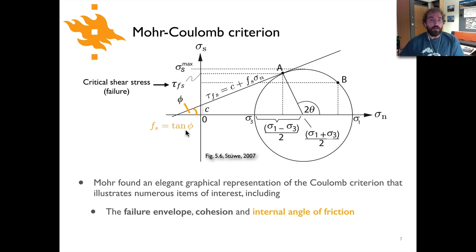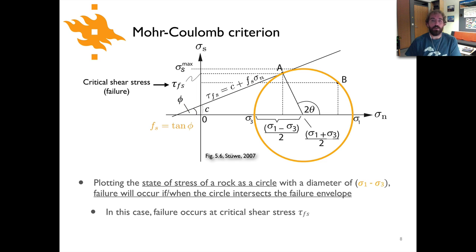So that is basically how we can plot the information about the relationship between the normal and shear stresses, the frictional strength of the rock. The other thing that can be shown on here is a circle. So we can take the state of stress in a given rock and plot it as a circle on this diagram.